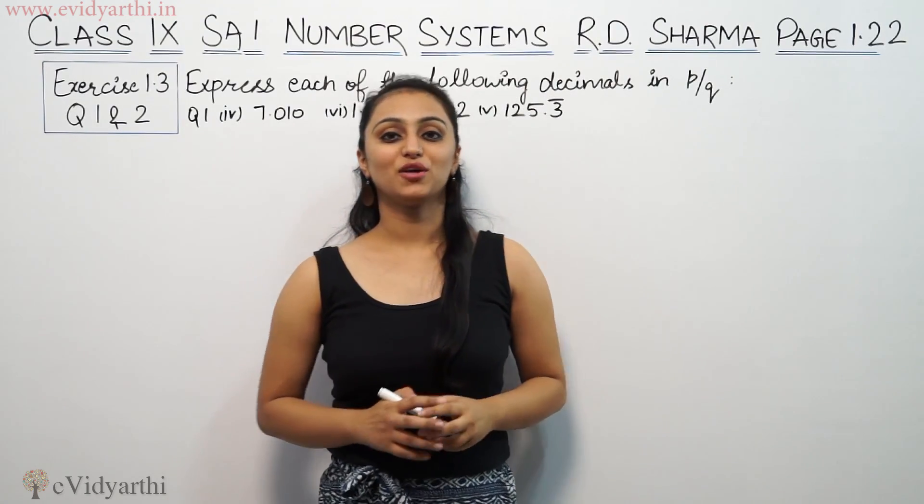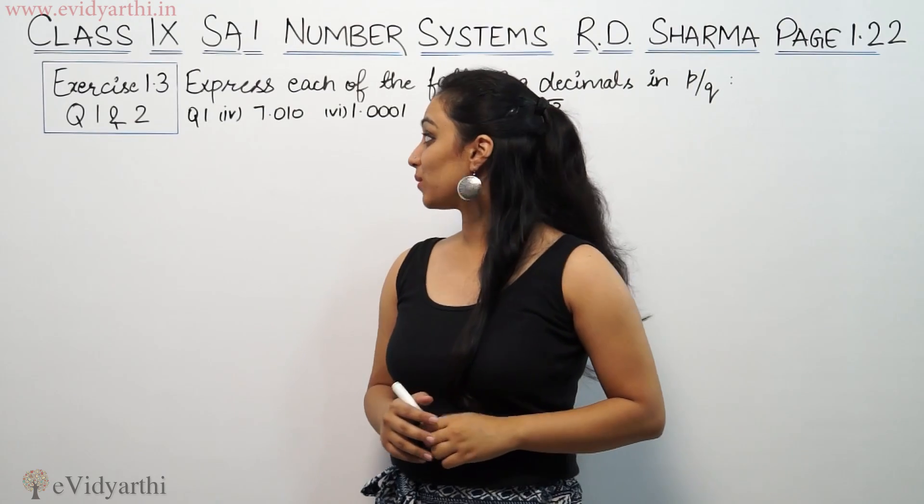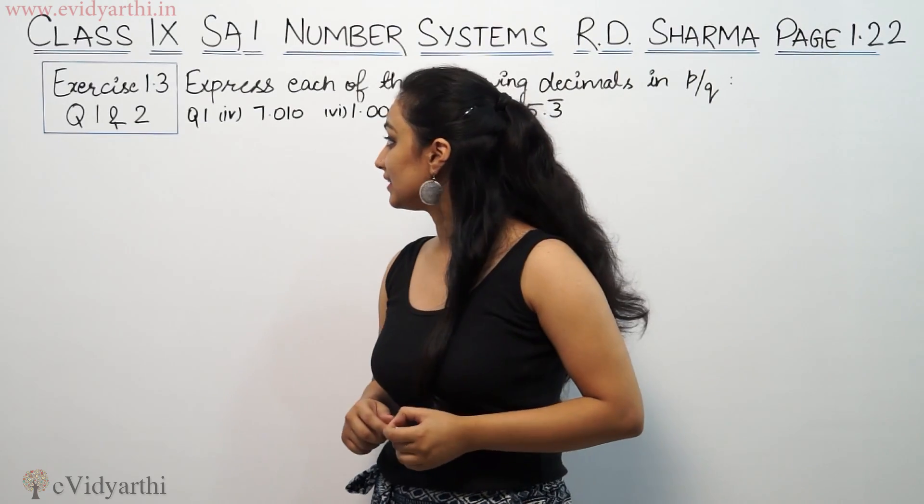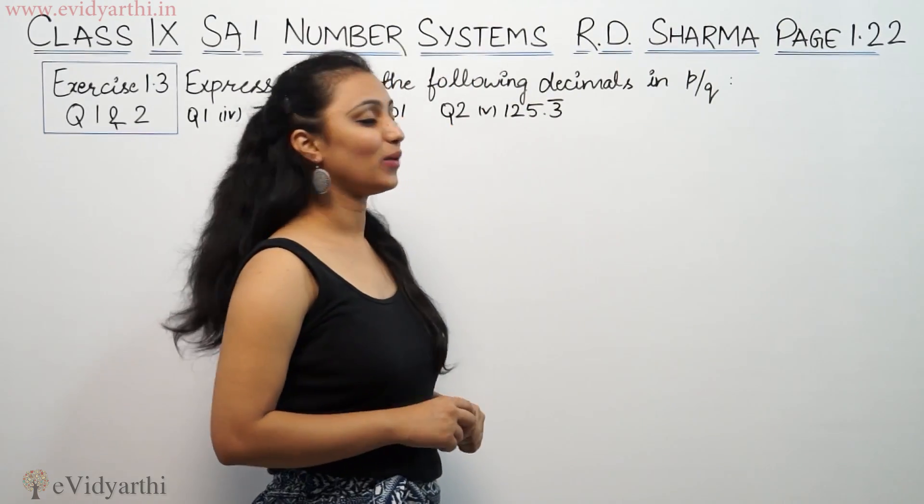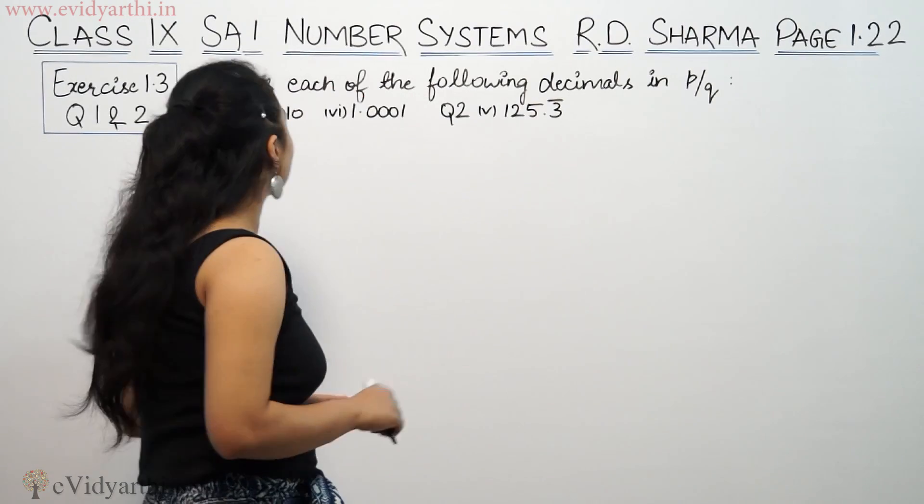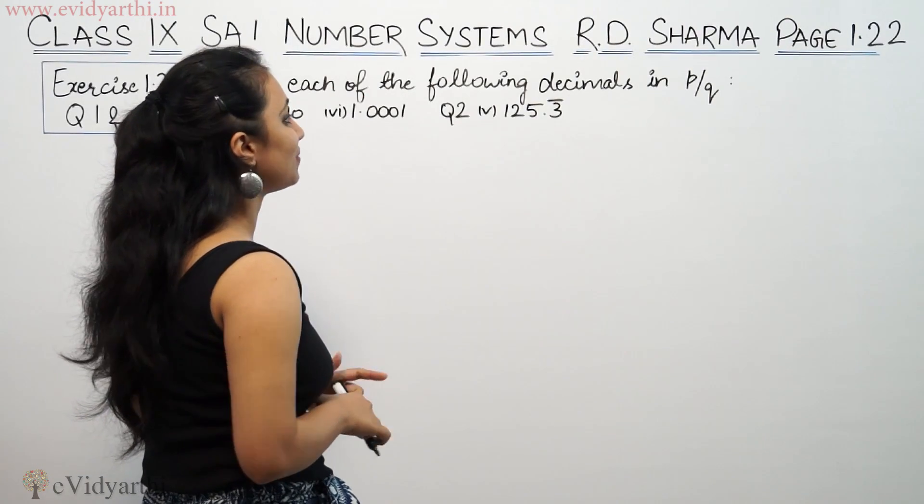Hi, this is Kushku with another question on number systems from Exercise 1.3, questions 1 and 2, page 1.2 from R.D. Sharma. This says express each of the following decimals in P/Q form.